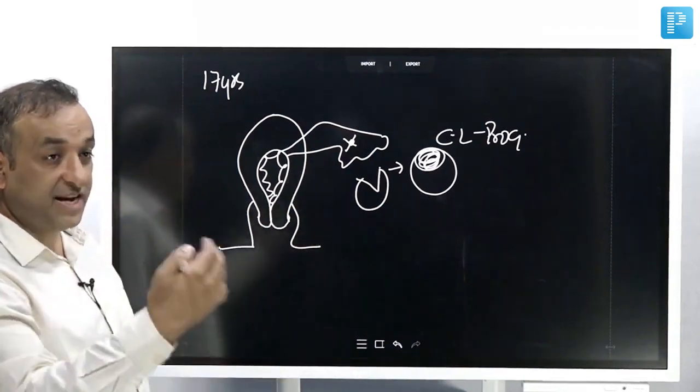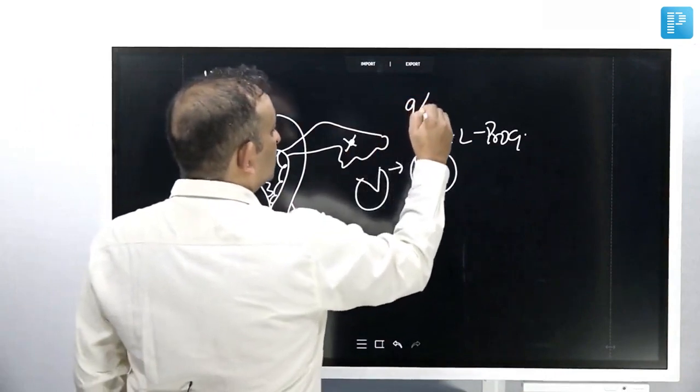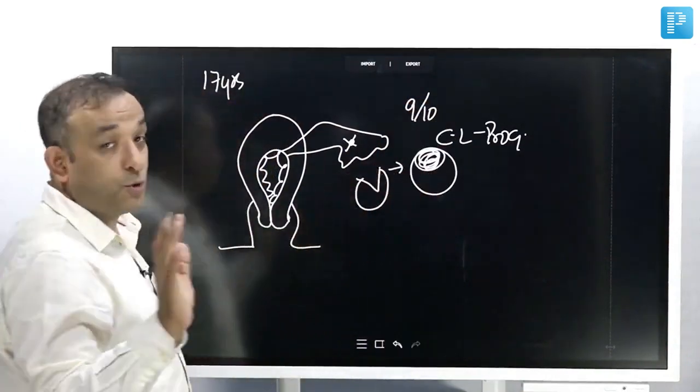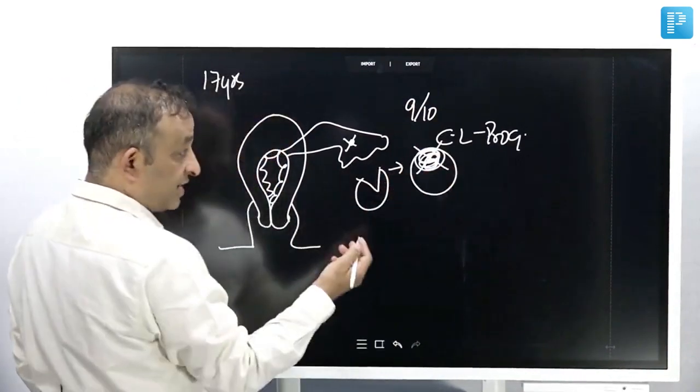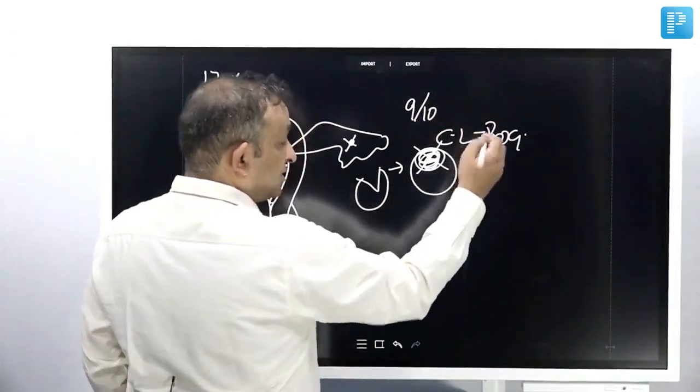Sixth day, seventh day after ovulation, eighth, ninth, ninth to the 10th day, the corpus luteum gives up hope that okay, this month also there's not going to be any pregnancy. So, corpus luteum starts to degenerate. Please remember 9 to 10th day, it starts to degenerate.